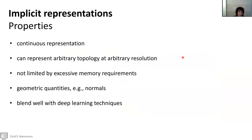The advantages of implicit representation are the following. First, we have continuous representation, and therefore we can represent arbitrary topology at arbitrary resolution. This is not limited by excessive memory requirements. Also, we can derive geometric quantities like normals through processing. And very importantly, this blends well with deep learning techniques, as we'll see later on.